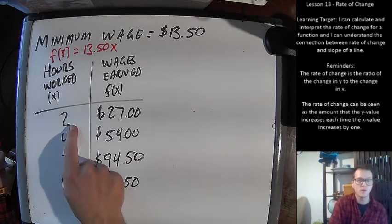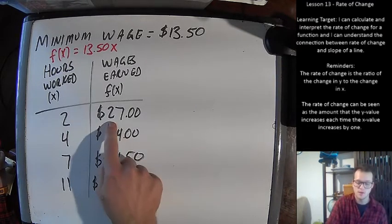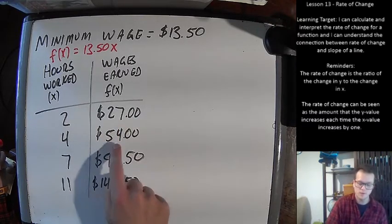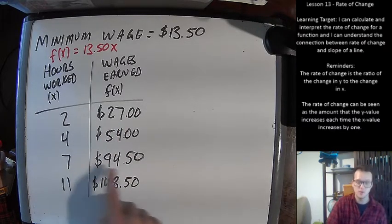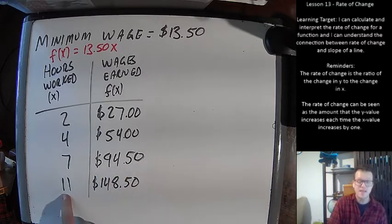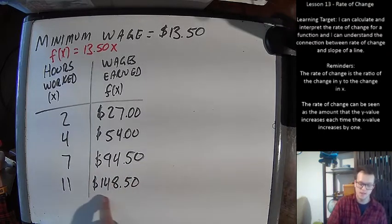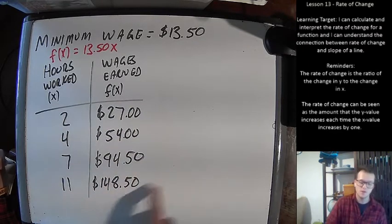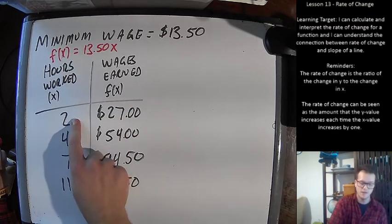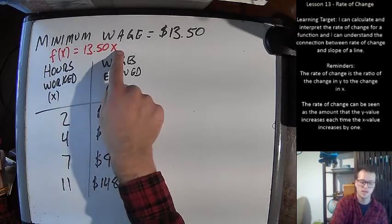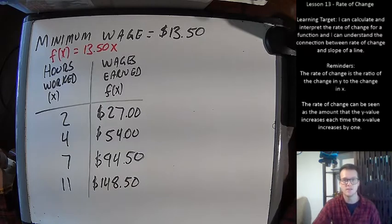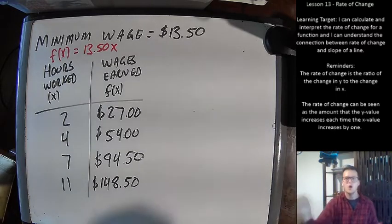So if you work a two hour day, nice and short and sweet, your employer then owes you $27. If you work four hours, it's $54. Seven hours, $94.50. And if you work a super long day, 11 hours, your employer owes you $148.50. The way that I found all these is I just plugged, I found F of two. So I did two times 13.50, then I found F of four, F of seven, and F of 11.